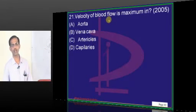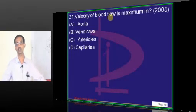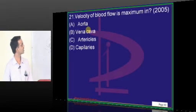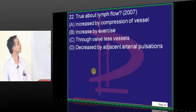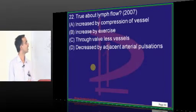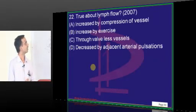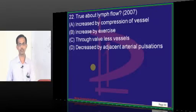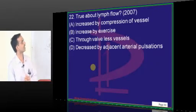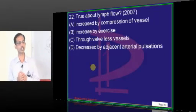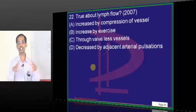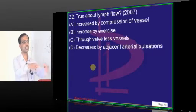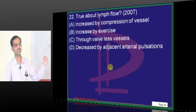Velocity of blood flow is maximum in the widest vessel — the aorta. True about lymph flow: increased by exercise; it occurs through valved vessels (veins and lymphatics are valved systems); it is a low pressure system. Compression of the vessel causes obstruction to lymph flow. Adjacent arterial pulsation will compress the lymphatic and cause obstruction. Exercise improves muscle contraction, which propels lymph forward; valves prevent backflow.